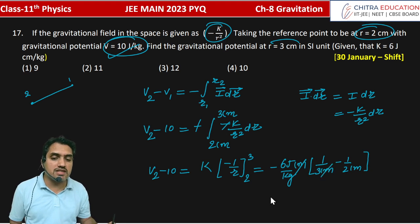This cm to cm will cancel. V2 minus 10 equals 6, and we need to find the LCM to solve. Then we will find 1 by 6.